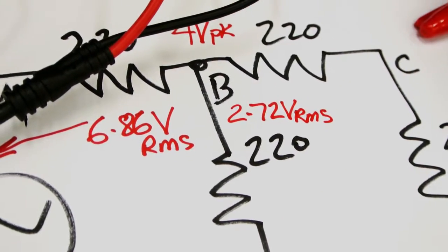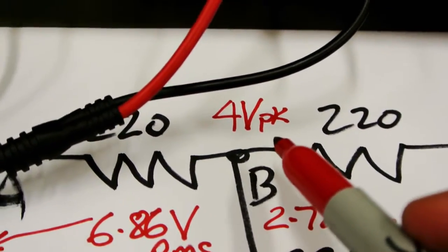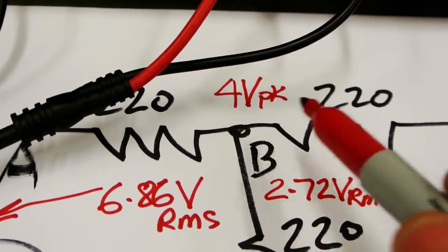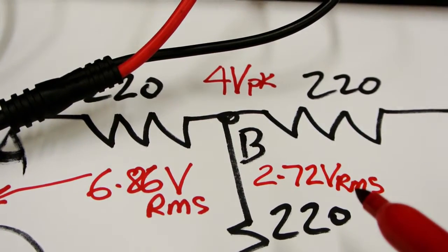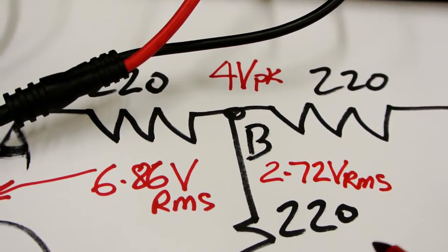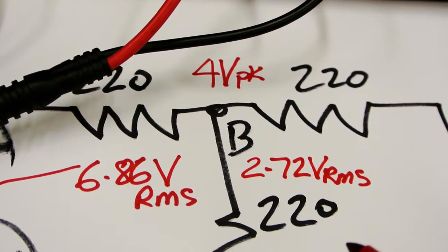And that again is an RMS voltage. Of course from 4 volts peak, 4 divided by root 2 would give me the RMS value. And if we do that, we find that should be 2.82 volts RMS. So we're just out by a little fraction there.